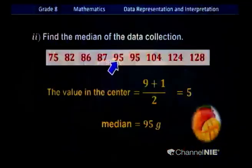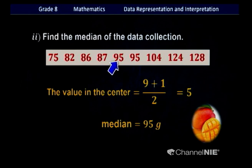This method is used for any set of data with an odd number of values. To find the median with odd number of data: step 1, rearrange in ascending order; then add 1 to the number of data, divide by 2 — this gives you the position of the median. This method differs when you have an even number of data; we will talk about that later.